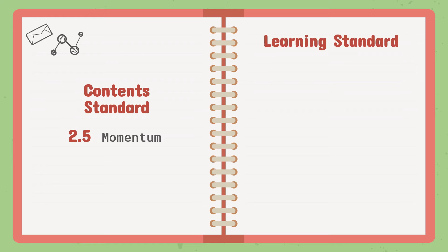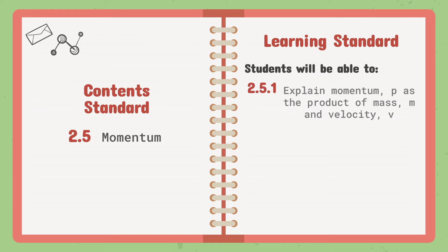There are two learning standards for this topic. The first is: students will be able to explain momentum P as the product of mass M and velocity V, best represented by P equal to MV. This learning standard requires the second level of Bloom's taxonomy, which is explained at the understand level.